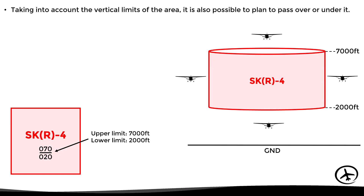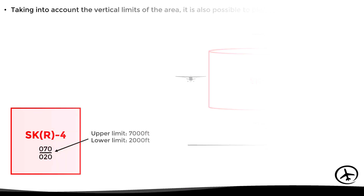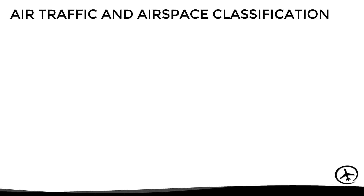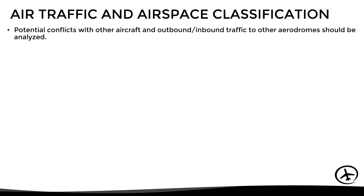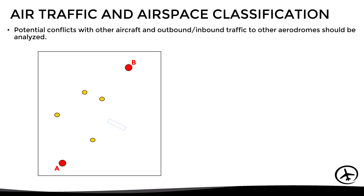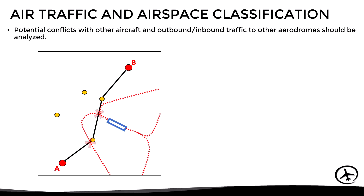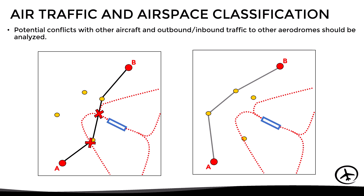Apart from restricted, prohibited, and dangerous areas, we also have to consider the general classification of airspace and possible traffic flow conflicts we may encounter in flight. For example, for a given flight we may have to consider outbound traffic departing from a major airport close to the planned route. If traffic flow is very high, ATC will likely not allow us to cross those departure routes, so we will have to choose a different route.